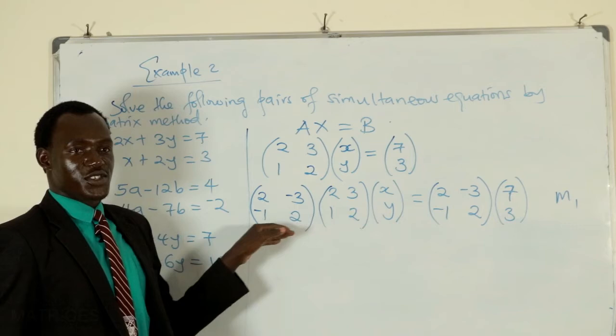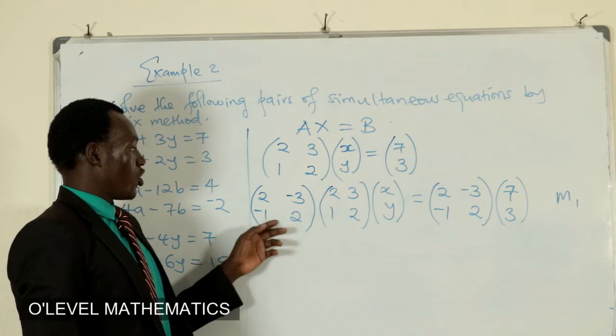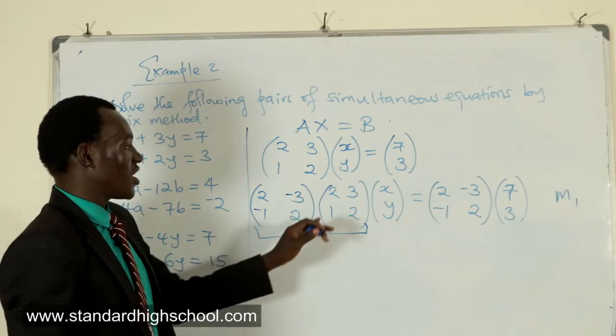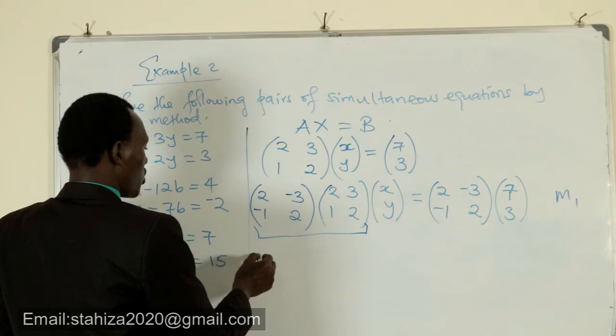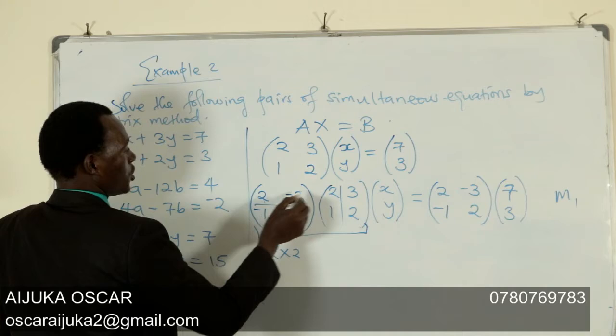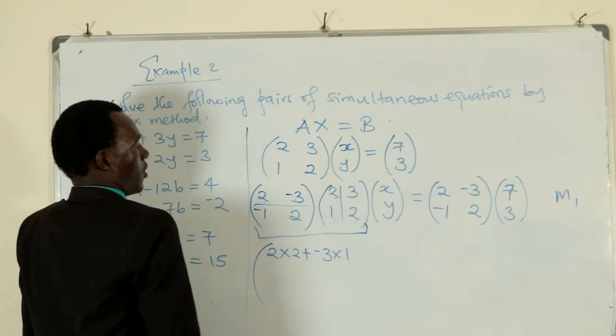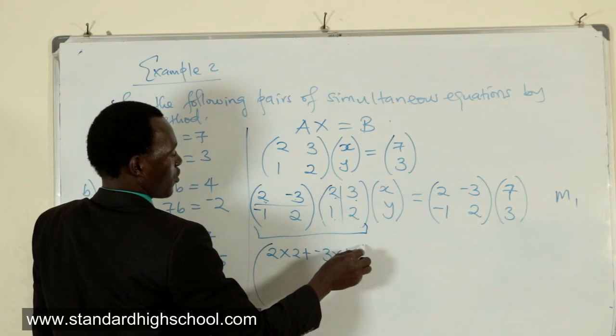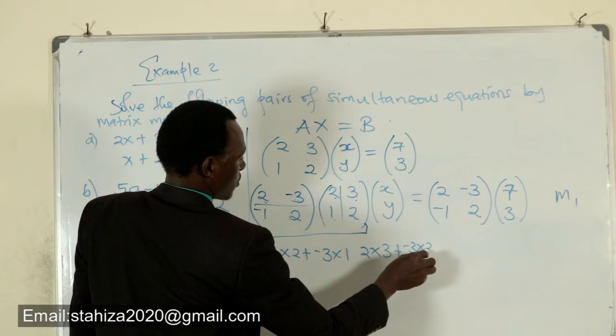From there, we have now three matrices to multiply. But since matrices follow the associative property, we can first multiply these first two matrices, and then later the product we shall multiply with x, y. By matrix multiplication, row by column, we have 2 times 2 plus negative 3 times 1. The row with this column will give us another column, which shall have 2 times 3 plus negative 3 times 2.